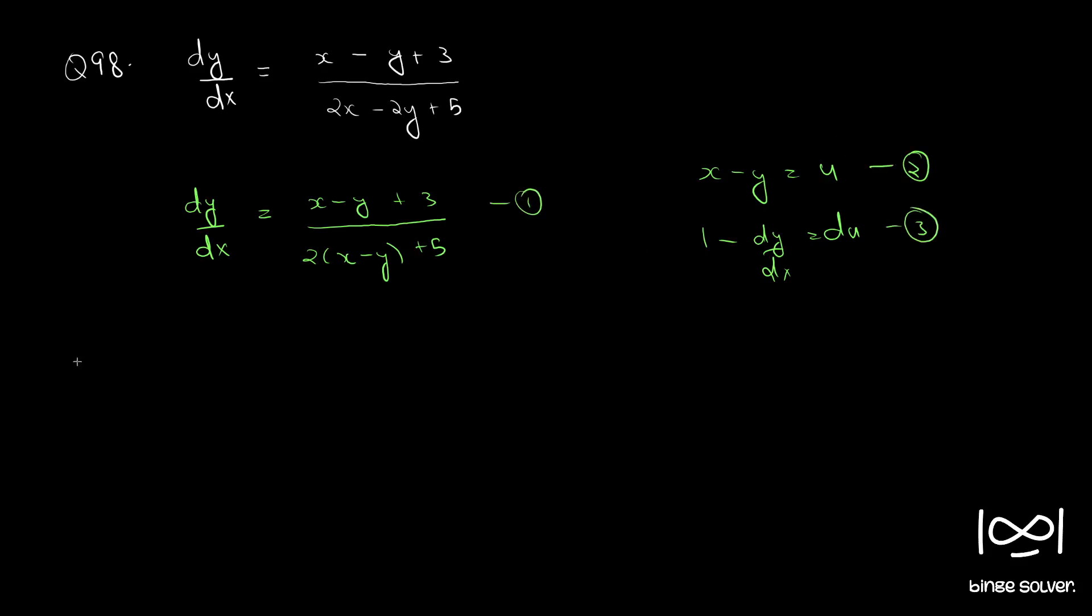this is 3. Using 2 and 3 in 1, we get, sorry this is du by dx, du by dx,